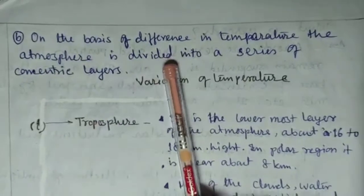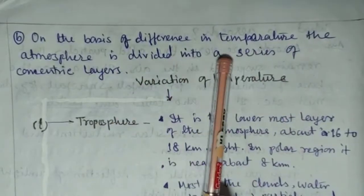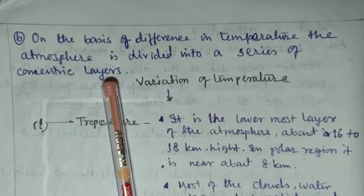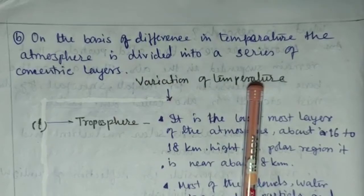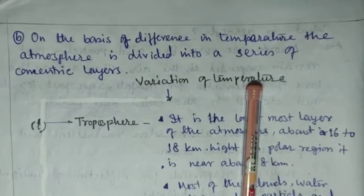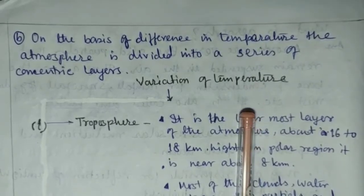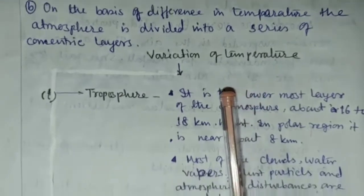On the basis of difference in temperature, the atmosphere is divided into a series of concentric layers. The variation of temperature layers are troposphere, stratosphere, mesosphere, thermosphere and ionosphere, and another two are exosphere and magnetosphere.